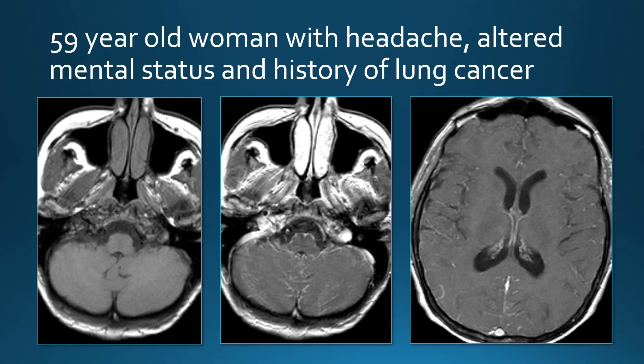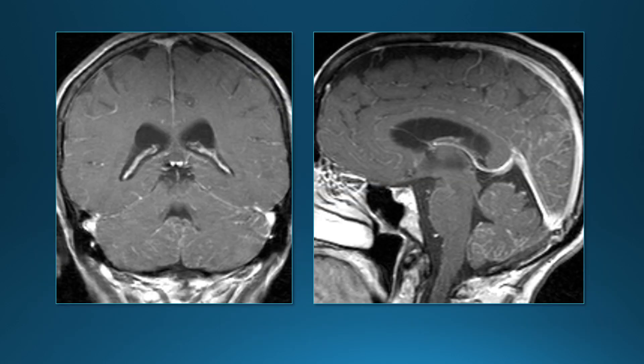This patient has a headache, altered mental status, and a history of lung cancer. This one is a little more subtle — we see some faint leptomeningeal enhancement within the cerebellar folia, maybe within a few cisterns. This is a patient with leptomeningeal metastases from lung cancer. The sagittal images show the leptomeningeal enhancement along the cerebellar folia very nicely. The cerebellar folia is quite a common location for leptomeningeal tumor deposits, probably due to the way the CSF flows.